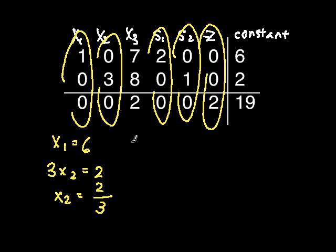By the same process, 2 s sub 1 equals 2 and z equals 19 halves. For the columns that aren't circled, the variables that they correspond to simply equal 0. So because this one isn't circled, x sub 3 equals 0.